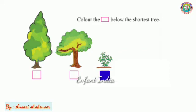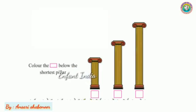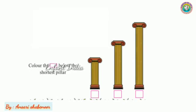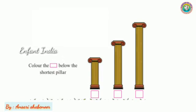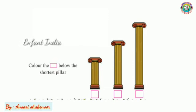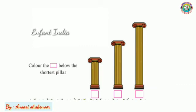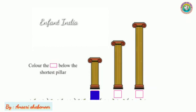Now, color the box below the smallest pillar. There are one, two, three pillars here. Our question is: which is the shortest pillar? We have to color it. The first pillar is the shortest.